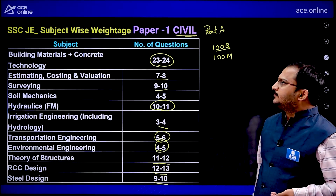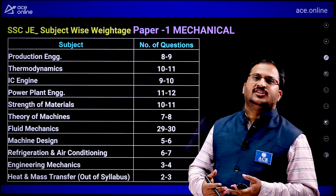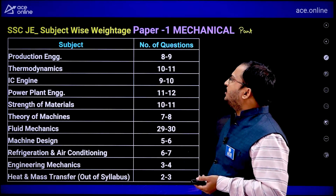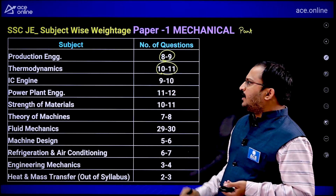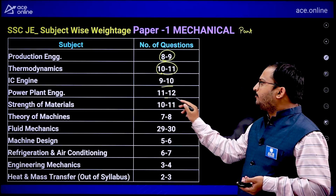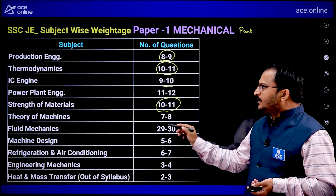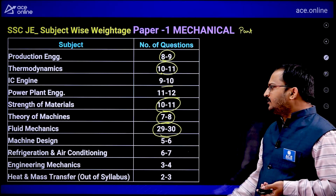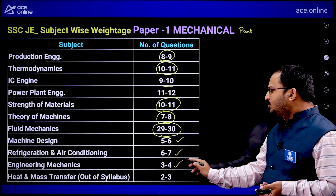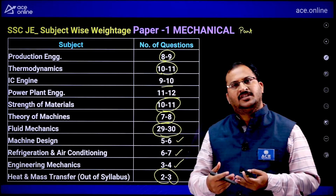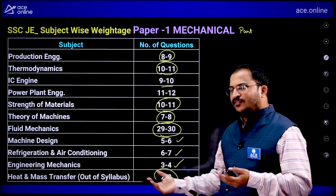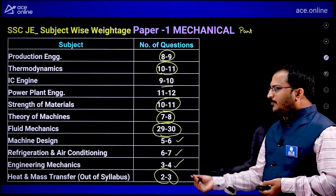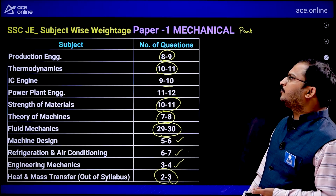For mechanical engineering students (Part B or Part C), the subject-wise weightage is: Production Engineering — 8 to 9 marks; Thermodynamics — 10 to 11; IC Engines — 9 to 10; Power Plant Engineering — 11 to 12; Strength of Materials — 10 to 11; Theory of Machines — 7 to 8; Fluid Mechanics — highest weightage at 29 to 30 marks; Machine Design — 5 to 6; RAC — 6 to 7; Engineering Mechanics — 3 to 4. Additionally, Heat and Mass Transfer questions have appeared in previous papers for around 2 to 3 marks.